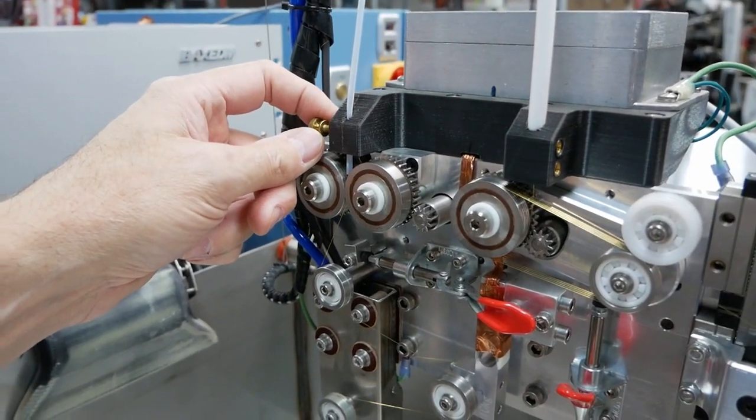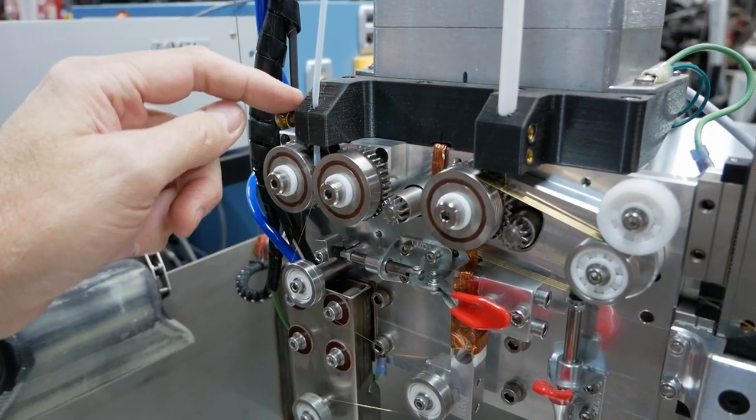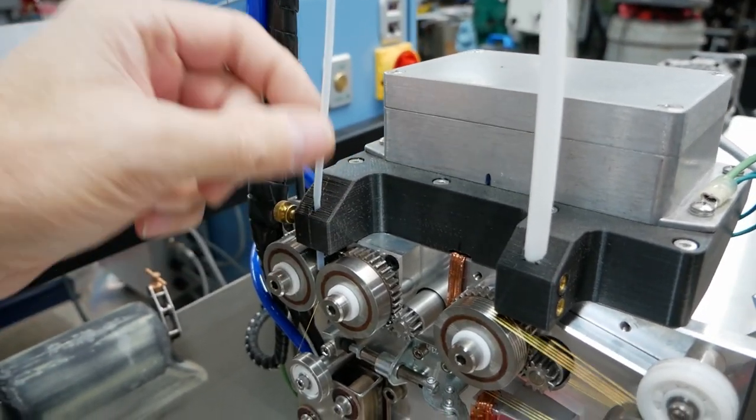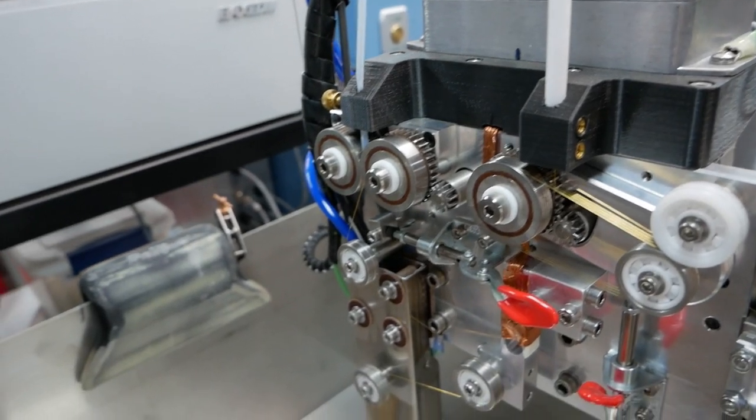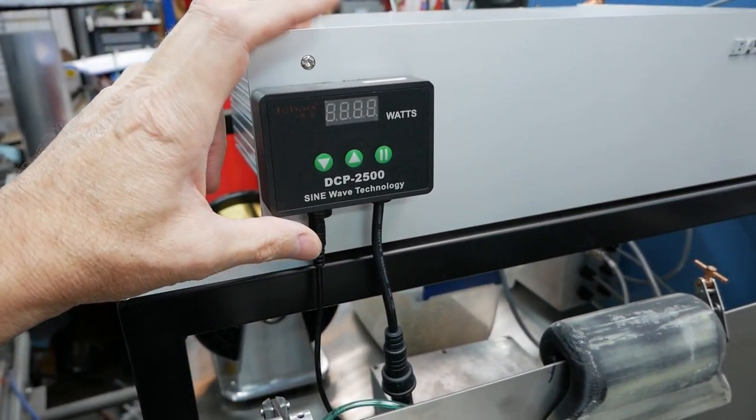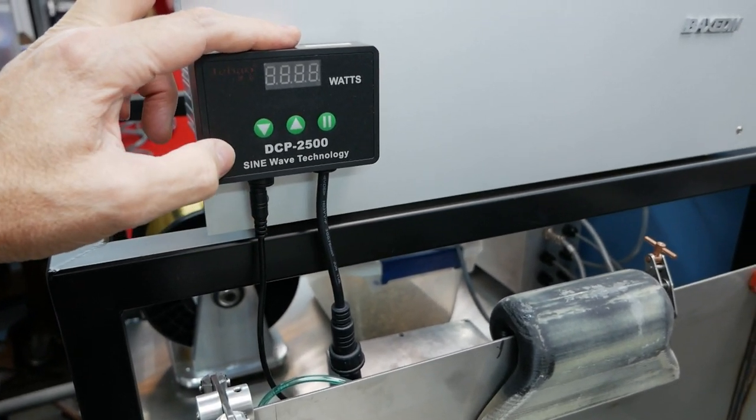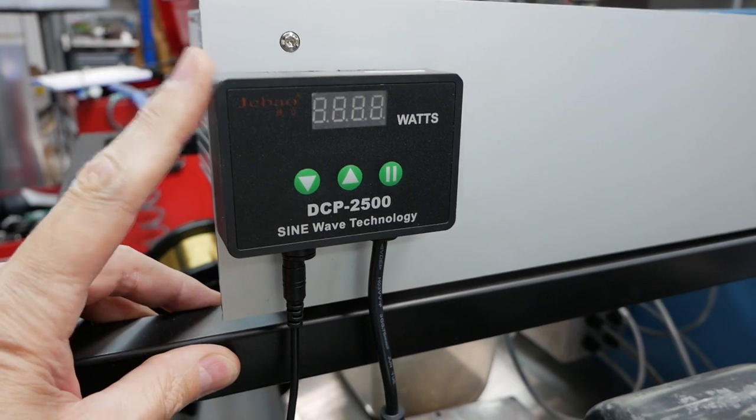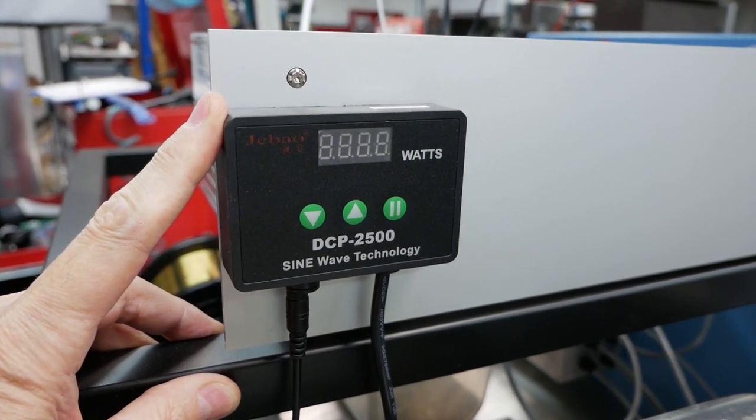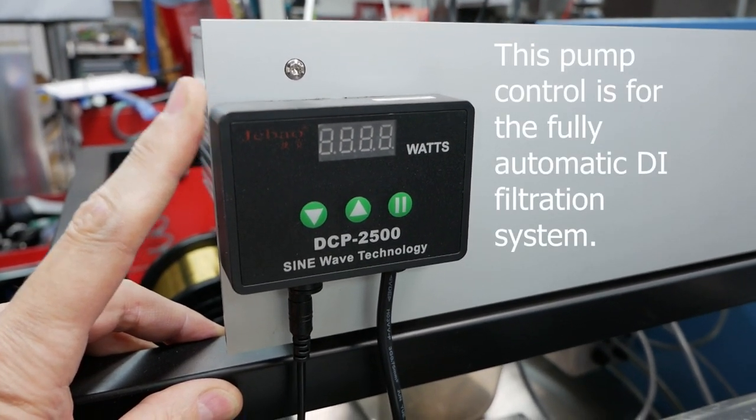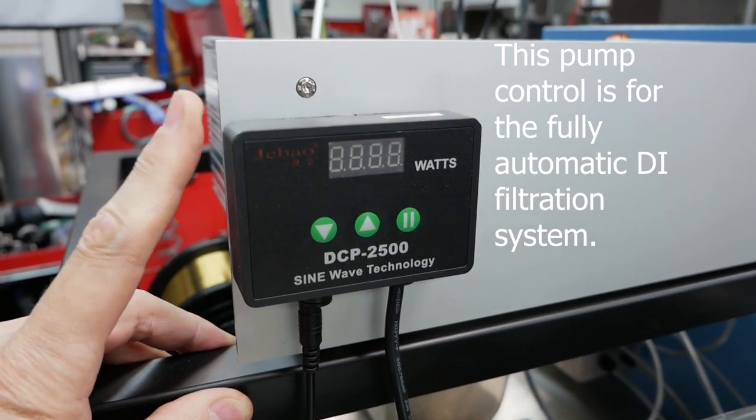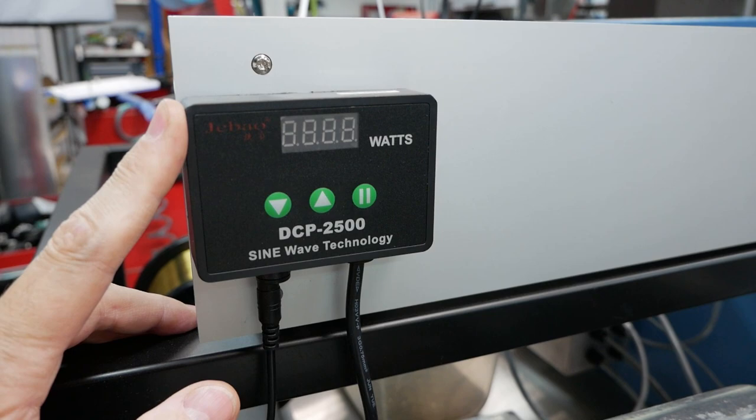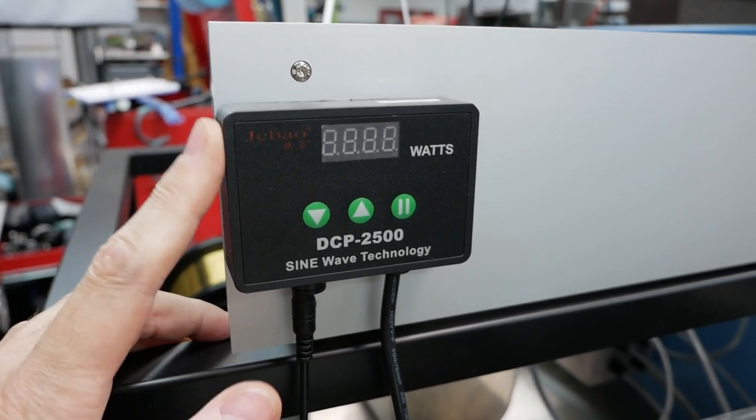All you do is you just undo this little thumb screw here, and then you can go ahead and slide the whole tube out. Usually you leave a length of about four inches or so of wire so that you can feed it back in right here. I went ahead and added this additional pump monitor. I really like this particular brand of pump. Pump is actually a brushless motor style pump. And so this is the control for it.